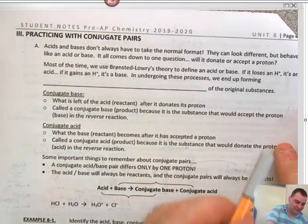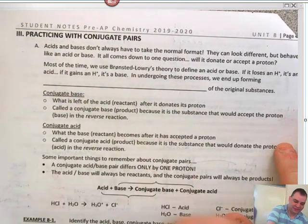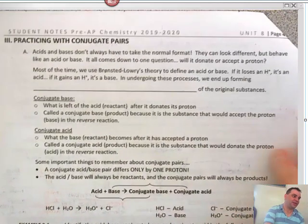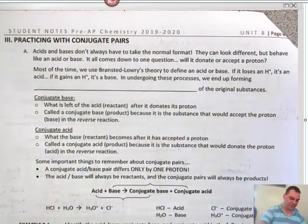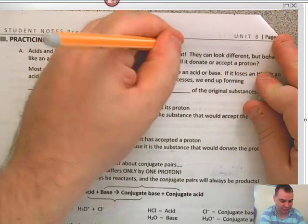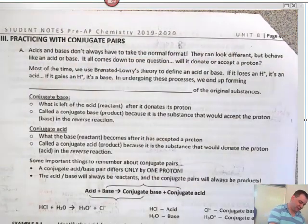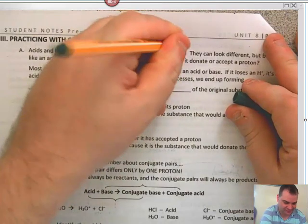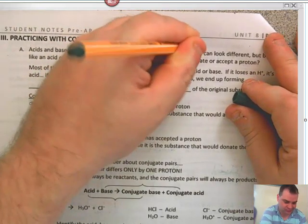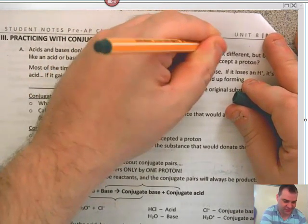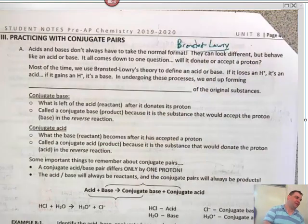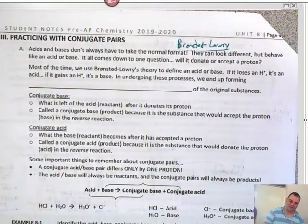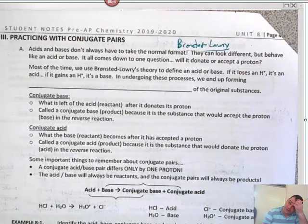Acids and bases do not quite fit the normal format — they behave like acids and bases. It comes down to the question: will it accept a proton or will it donate a proton? Remember, those were based off of the Brønsted-Lowry definitions. Conjugate acids and conjugate bases are based off of the Brønsted-Lowry definitions.